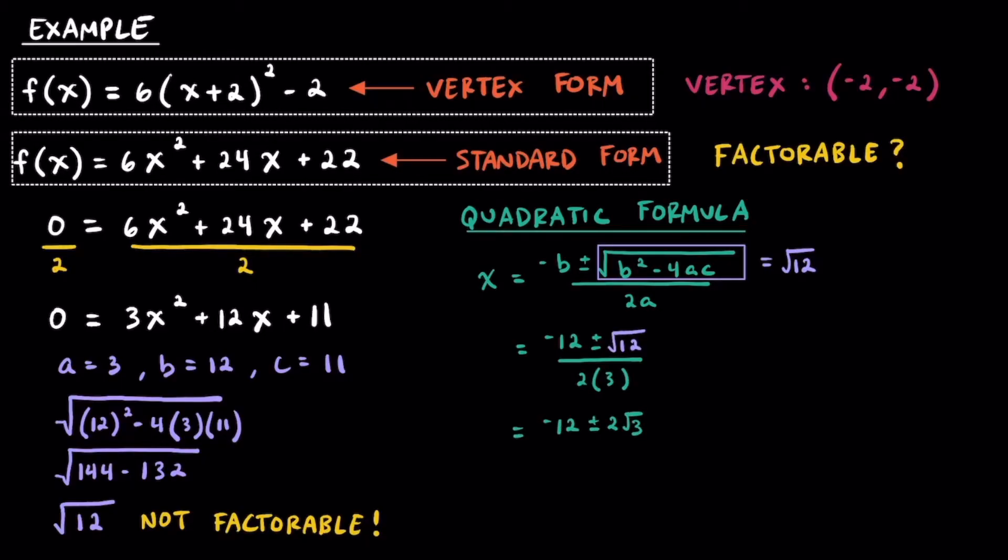Next, we're going to simplify the radical of √12 to 2√3. Then we'll divide everything by 2 to get (-6 ± √3) / 3. This means that x = (-6 + √3) / 3, and x = (-6 - √3) / 3. Plugging each of these into a calculator, we see that x is approximately equal to -1.42 and about -2.58.